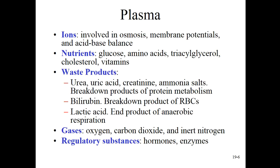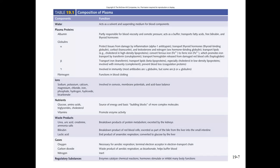If you need to pause to take this all in, this would be a good time to do so. Here's a great summary in table 19.1 — you should know all of this. Do a little research, dig in your book, learn about the different globulins: alpha globulins, beta and gamma globulins. Put it into your own words, put it on a flashcard, and work with the material.